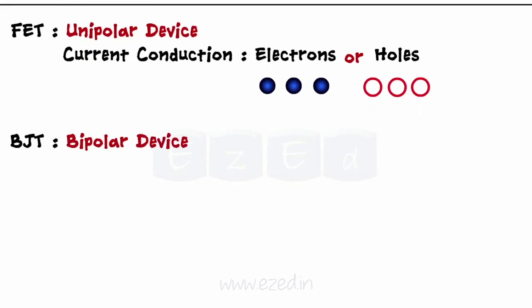This is the major difference between the BJT and the FET as the BJT conduction of current takes place due to both electrons and holes.